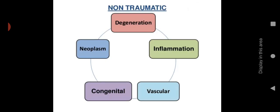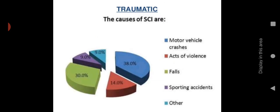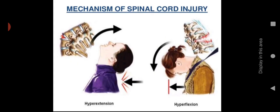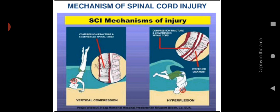Causes are mainly traumatic and non-traumatic. Non-traumatic causes include degeneration, inflammation, vascular causes, congenital conditions, and neoplasm. Traumatic causes include motor vehicle crashes, acts of violence, falls, and sporting accidents. The main mechanisms of spinal cord injury are hyperextension, hyperflexion, and vertical compression.